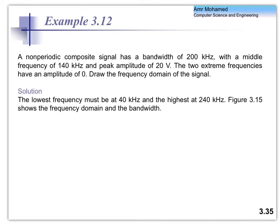We stopped at this example: if we have a non-periodic composite signal with a bandwidth of 200 kilohertz, a middle frequency of 140 kilohertz, and a peak amplitude of 20 volts, and the two extreme frequencies — which you have to calculate — have an amplitude of zero, how does the signal look in the frequency domain?